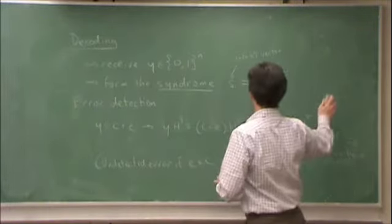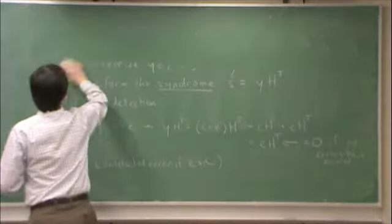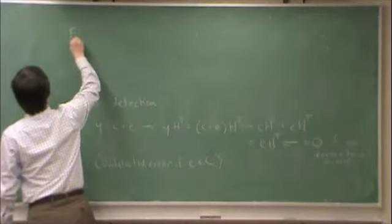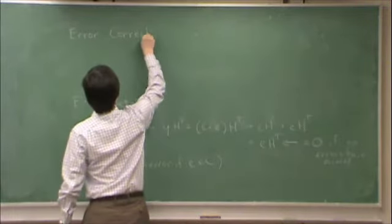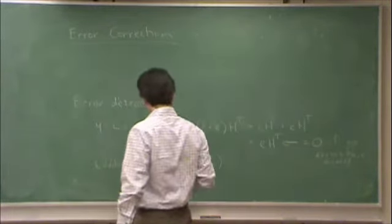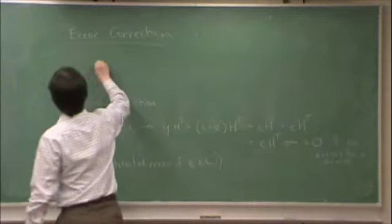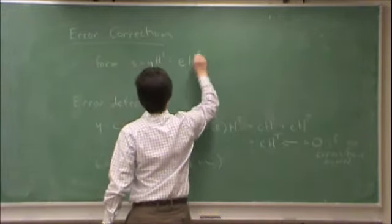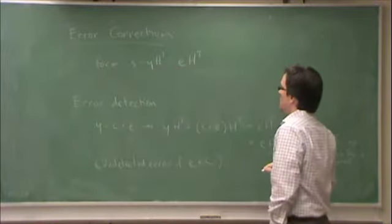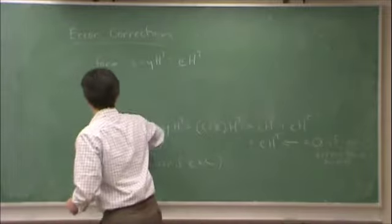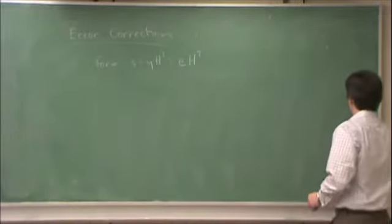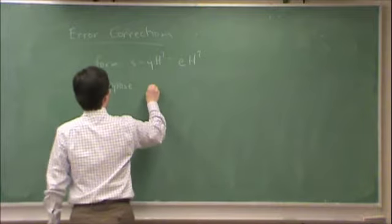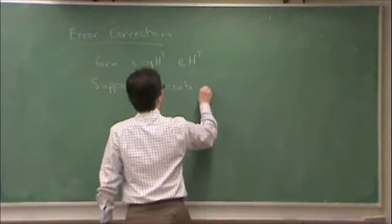Okay, how about error correction? Again, we form the syndrome, which we already know is equal to e h transpose. So as a simple example, suppose e contains at most one error.